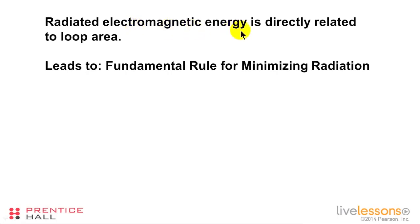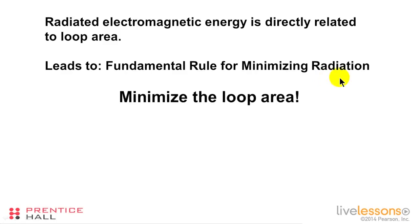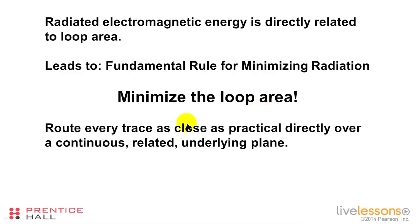Radiated electromagnetic energy and EMI are directly related to loop area. This leads to a fundamental rule for minimizing radiation: minimize the loop area. This is perhaps the most fundamental rule for signal integrity purposes in printed circuit board design. We do that by routing every trace as close as practical directly over a continuous related underlying plane. That is our number one design rule in PCB design for signal integrity reasons.